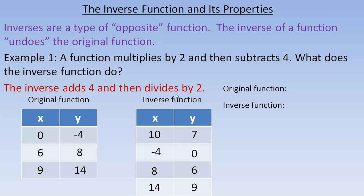Now let's take a look at this from an algebraic point of view. The original function multiplies by 2 and then subtracts 4. Using x as the independent variable and y as the dependent variable, the equation is y = 2x - 4.